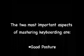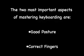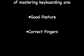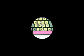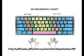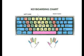The two most important aspects of mastering keyboarding are good posture and using the correct fingers on the right keys on your keyboard. If you're using a Macintosh computer, your keyboard will look something like this. Notice the colors on the keys and the hands below that show which fingers are supposed to type which keys on the keyboard.